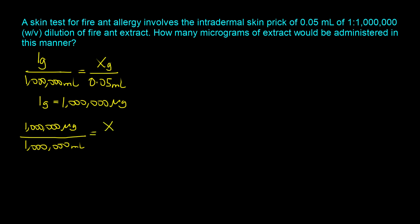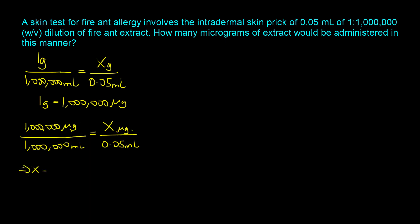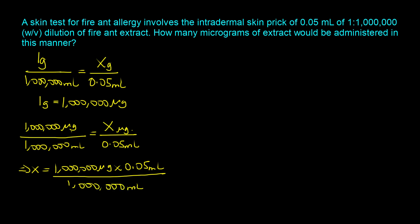That means our unknown quantity is x micrograms over 0.05 milliliters. This is a proportion, so the units on both sides of the equals sign must match in numerator and denominator. Solving for x: x equals 1 million micrograms times 0.05 milliliters divided by 1 million milliliters. The milliliters cancel and the zeros cancel, giving x equals 0.05 micrograms.